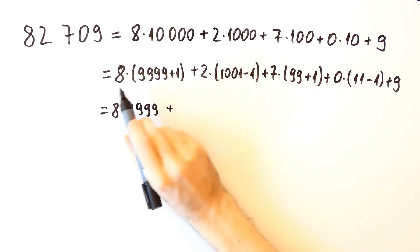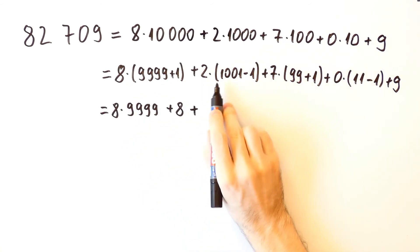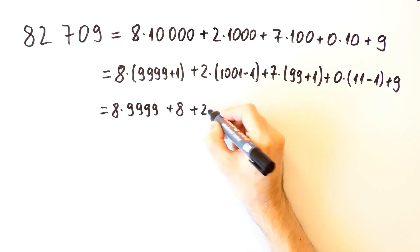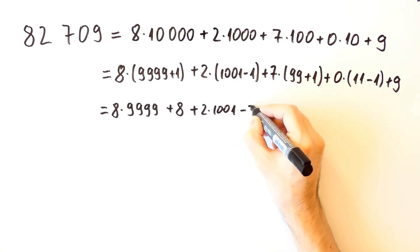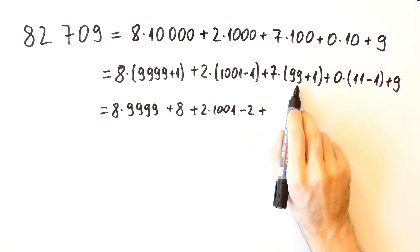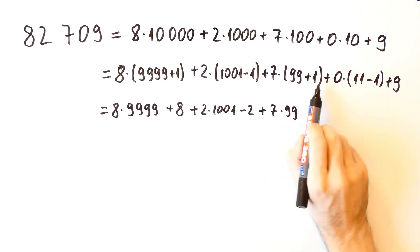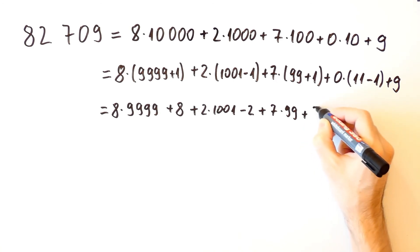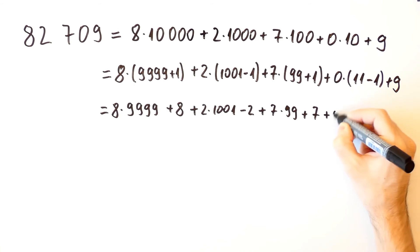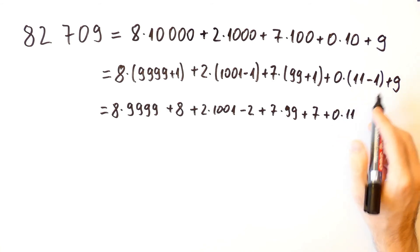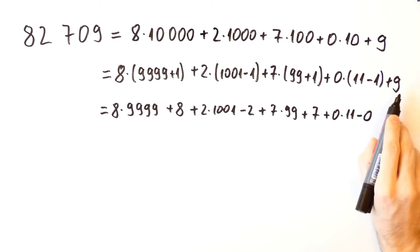We can rewrite the expression using: 8 times 9,999 plus 8 times 1, which is 8; plus 2 times 1,001 minus 2 times 1, which is 2; plus 7 times 99 plus 7 times 1, which is 7; plus 0 times 11 minus 0 times 1, which is 0; and plus 9.